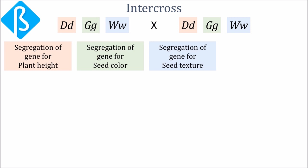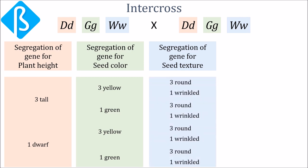This trihybrid cross can be partitioned into three monohybrid crosses because all the genes assort independently. For each gene we expect the phenotypes to appear in 3:1 ratio. Thus for plant height it's 3 tall 1 dwarf, seed color is 3 yellow 1 green, and for seed texture is 3 round 1 wrinkled.